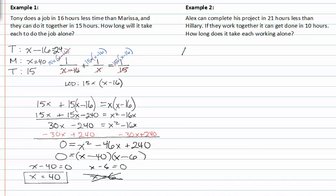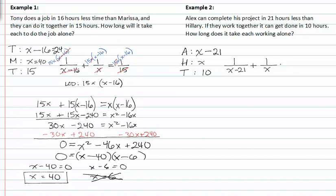In example two, Alex can complete a job in twenty-one hours less than Hillary. Notice that Alex is being compared to Hillary, so Hillary is x. Alex works Hillary's time minus twenty-one hours. The total is ten hours if they work together. We can solve this by writing our work equation: one over (x minus twenty-one) for the time Alex works, plus one over x for the time Hillary works, equals one over ten.